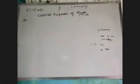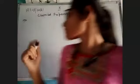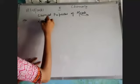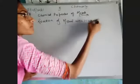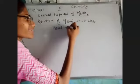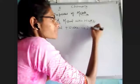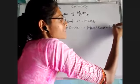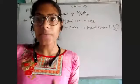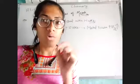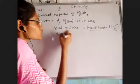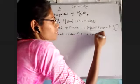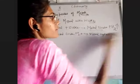The second chemical property is: what would happen if metals react with water? When a metal reacts with water, it forms a metal oxide with the release of hydrogen gas. The metal is converted to metal oxide, and hydrogen gas is also released. If you dissolve the metal oxide into water, it would make metal hydroxide — that is MOH.